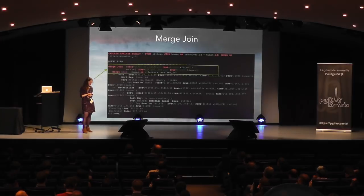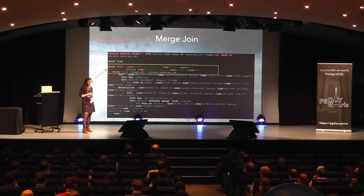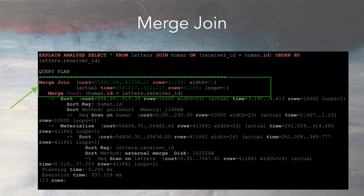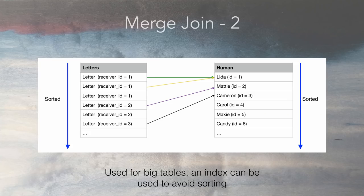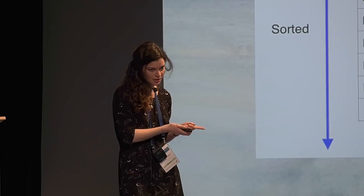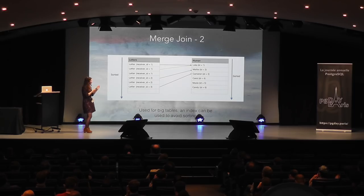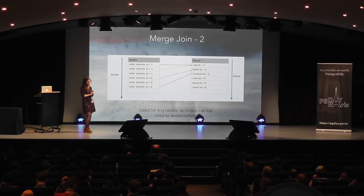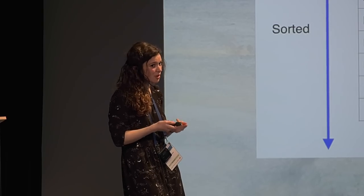For really big tables, a merge join is used. It sorts both tables and then joins them. The problem is that sorting can be costly if you don't have an index. If you see a merge join, also consider that it might be happening because you're trying to retrieve too many rows — that can also be a reason.